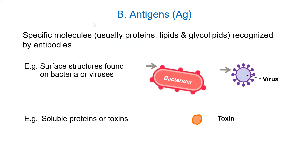Number two is antigens. An antigen is a molecule usually found on the pathogen. The pathogen itself is too large to be recognized — the whole thing is not recognized. An antigen is the specific molecule on that pathogen, such as a glycoprotein or a cellular carbohydrate found on a pathogen.